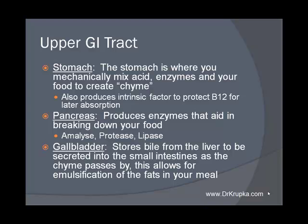Next, we have the gallbladder. The gallbladder does do things — it has a purpose. It stores bile from the liver to be secreted into the small intestines as the chyme passes by. This allows for emulsification of the fats that were in your meal. Bile consists of trash from the liver and bile salts, which are made to emulsify the fats in your diet so that you can absorb them appropriately. The gallbladder stores that until it senses that the food passing by has a significant fat content. Then it contracts and squirts that bile onto the food, emulsifying the fat so you're able to absorb it.